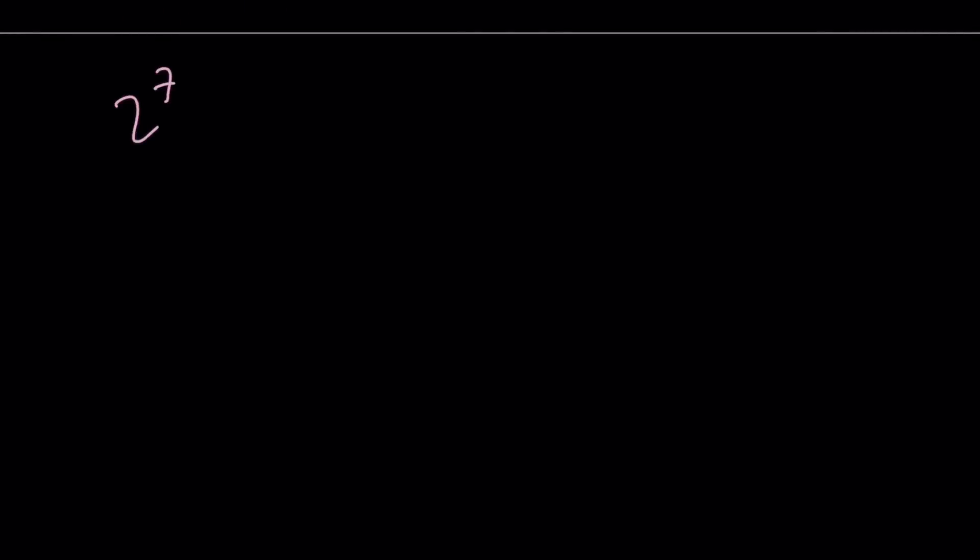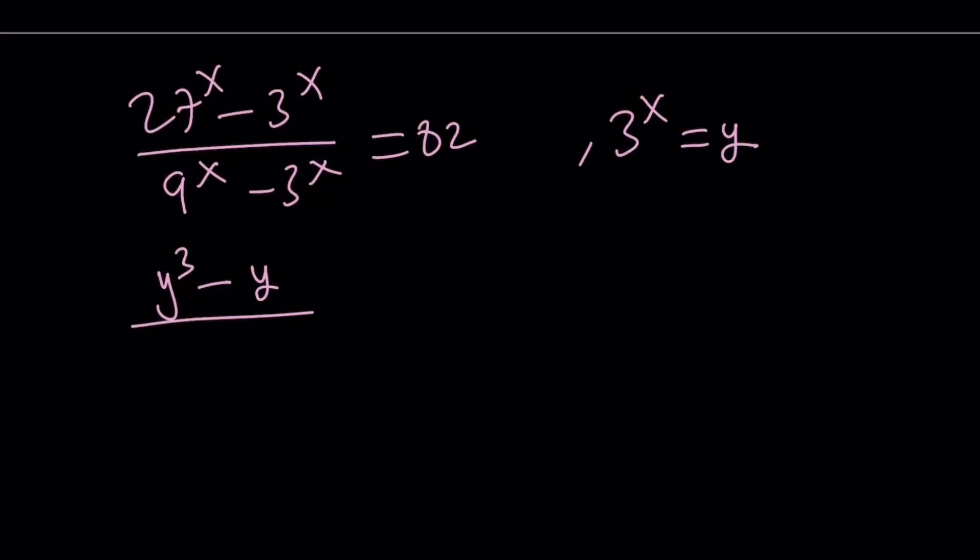So let's go ahead and make all the replacements, and we're going to get the following. So let me repeat, let me rewrite the original problem. And this is equal to 82, and we called 3 to the power x y. Now 27 to the power x, remember that was y cubed, 3 to the power x is y, 9 to the power x is y squared, and 3 to the power x is y again, and this is equal to 82.